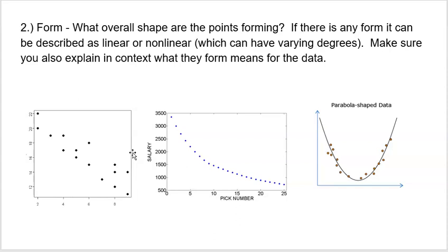All right. Then we look at the form. Form is what overall shape are the points forming? If there is any form, it could be described as linear or nonlinear. And nonlinear could have varying degrees. Like you could see a giant curve or a slow curve or a parabolic curve. So we usually just kind of separate it as, do you see a line or do you see anything other than a line, which we just call nonlinear? So make sure you really explain in context, and we're going to talk about that in a minute, what this means for your data. But in this first graph, you might not see a perfect line, but we do see kind of an overall linear pattern here that is clearly negative, right? In this middle one, we see a slight curve. So that's like nonlinear and it's just slightly nonlinear, like a slight curve. And then here we see a parabolic curve. This is clearly not linear. It's a clear curve that starts going down and then continues going up afterwards. So look for the form. We're usually just classified as linear if we see a line or nonlinear if we don't.